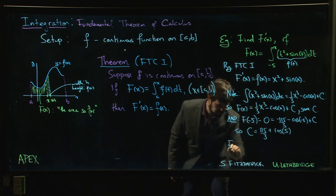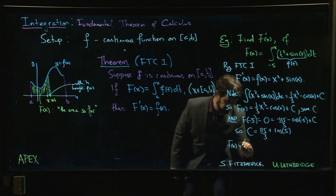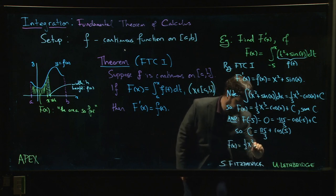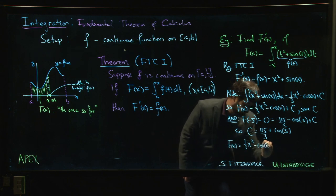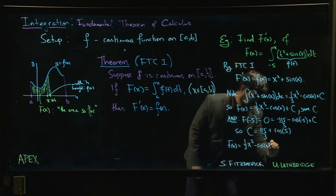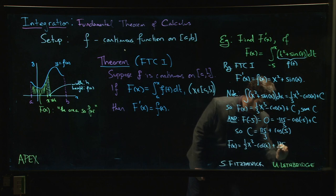F of x is going to be one third x cubed minus cos x plus 125 over three plus cosine of five.